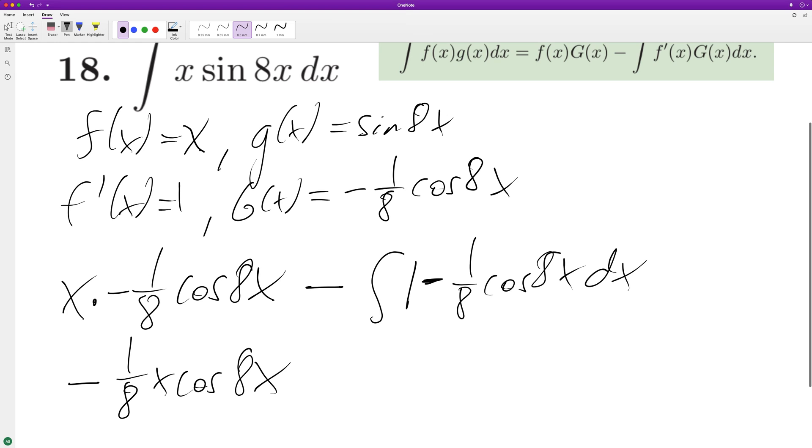And then times the one-eighth, so we're... and then the two negatives cancel out, so we plus one over 64 sine of 8x plus C, and that's it.